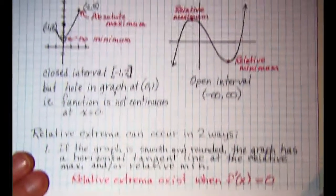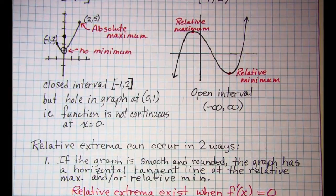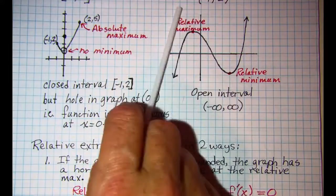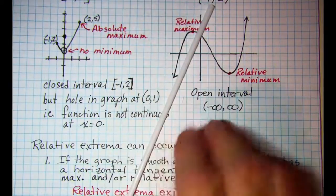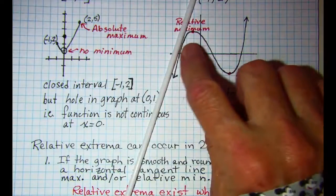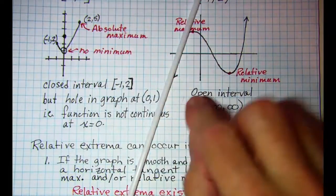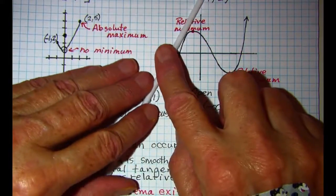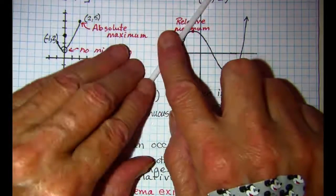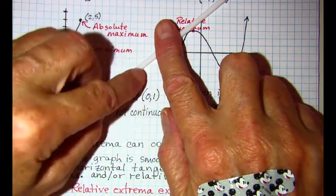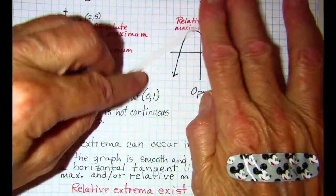Now recall that if we were going to look at our tangent line here on this one, my tangent line as I go up this curve has a positive slope and it continues to have a positive slope. But then as I hit that relative max